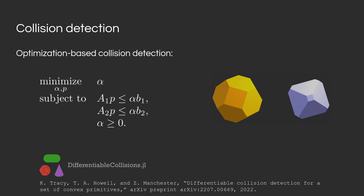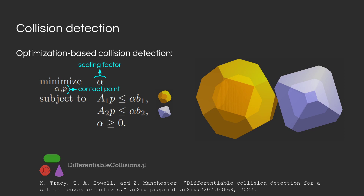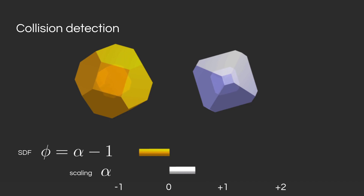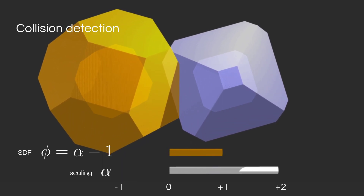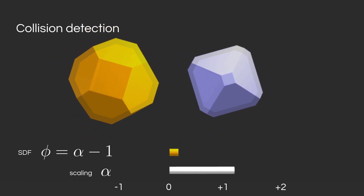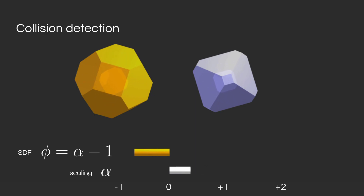You want to find a scaling factor alpha and a contact point P, such that P belongs to shape 1 (a scaled version of shape 1) and P belongs to the scaled version of shape 2. You want to find the smallest scaling factor alpha that will have both shapes intersect — in this case, the smallest alpha is going to be 1.5. At alpha equal to 0, both shapes are reduced to a single point; at alpha equal to 1, both shapes respect their original dimensions; and at alpha equal to 2, both shapes are twice as big.